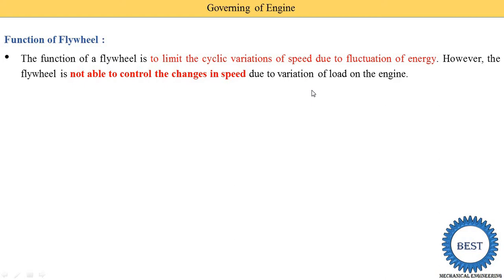Suppose the car is moving in a downhill area - we are moving with gravitational force, so the car requires lower power because the load is reduced. According to the load, the engine speed is reduced or increased. This speed variation is not controlled by the flywheel, but it is controlled by using the governing of the engine or governing mechanisms.